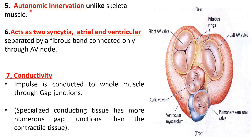The cardiac muscle fibers are supplied by autonomic nerves and cannot be controlled by our will, whereas skeletal muscle fibers are supplied by somatic nerves and are called voluntary muscle fibers because we can ask them to work on our will.